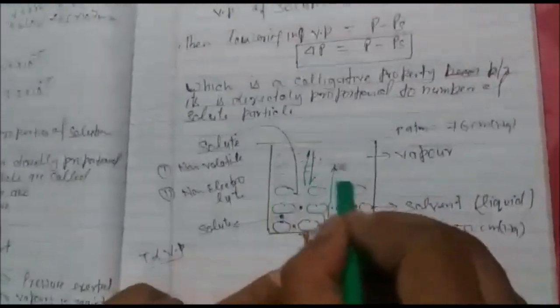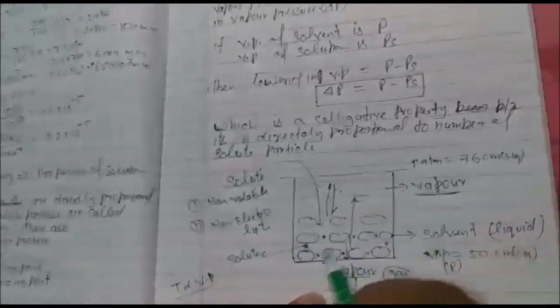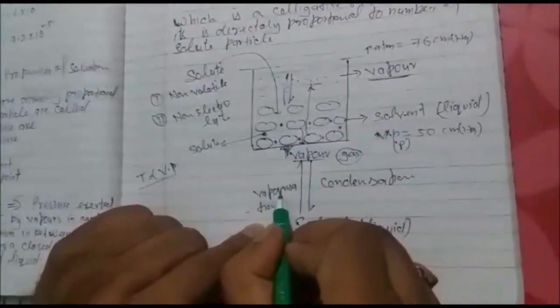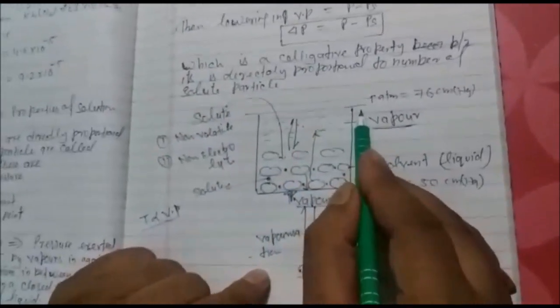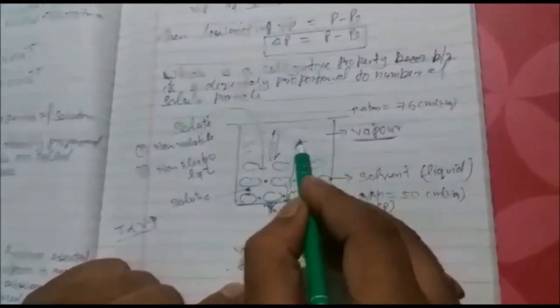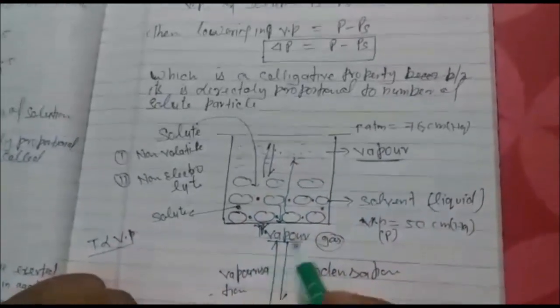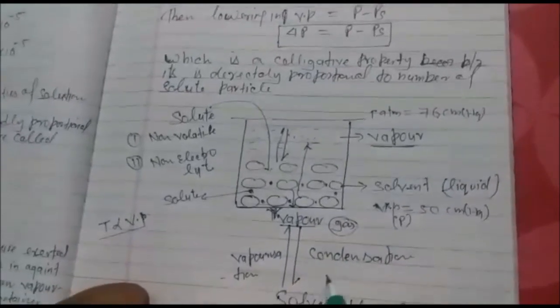So this is formation of vapors. Solvent to vapor, this process is known as vaporization. If container is closed, then after some time, this vapor again change into liquid. This process in which vapor change into liquid solvent called condensation.